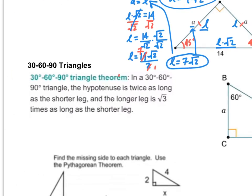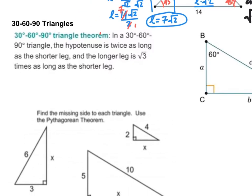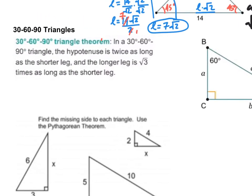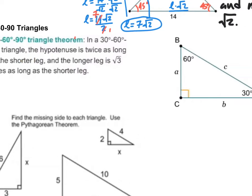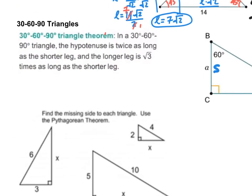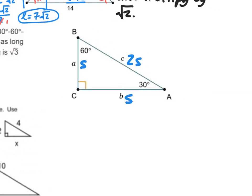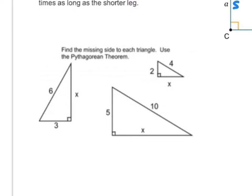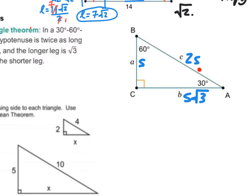Now let's talk about 30-60-90 triangles. If I have a right angle and either of the other angles is 30 or 60 degrees, then I have a 30-60-90 triangle. The hypotenuse is twice as long as the shorter leg. I'll call the shorter leg S, the hypotenuse 2S, and the longer leg S times the square root of three. Let's use the Pythagorean theorem to figure out those values in some examples.